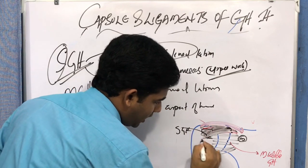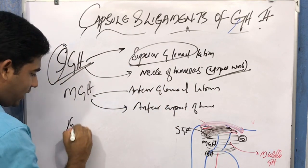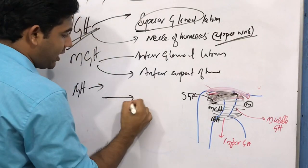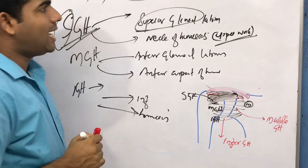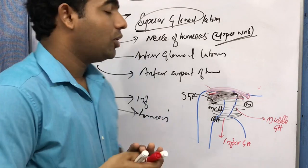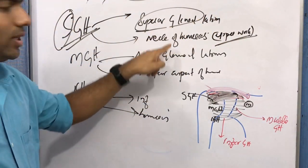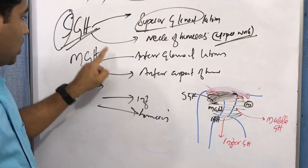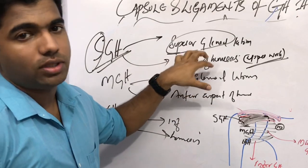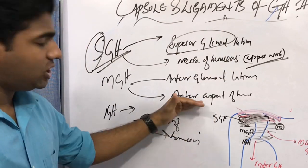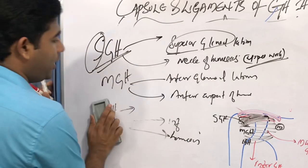The superior glenohumeral ligament (SGL) attaches to the upper neck, the middle glenohumeral ligament (MGL) to the anterior aspect, and the inferior glenohumeral ligament (IGL) arises from the inferior aspect of the glenoid labrum and attaches to the humerus. All three attach to the neck of the humerus, with the SGL specifically at the upper neck and the MGL and IGL at the anterior and inferior aspects respectively.